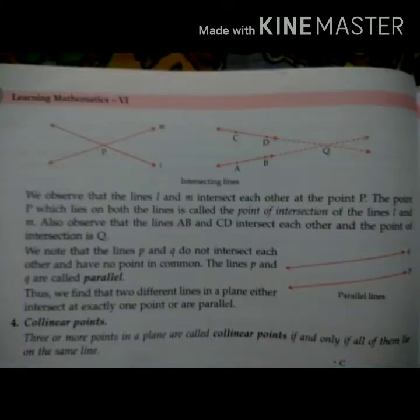Intersecting lines are those which meet at one point. There are two lines m and l and they meet at point p. So these are intersecting lines. Point p is the point of intersection.